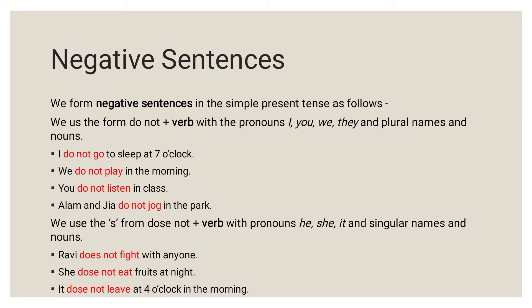We are going to learn about negative sentences. In negative sentences, 'not' will come in between. We form negative sentences in the simple present tense as follows: we use the form 'do not' plus verb with the pronouns I, you, we, they, and plural names and nouns.